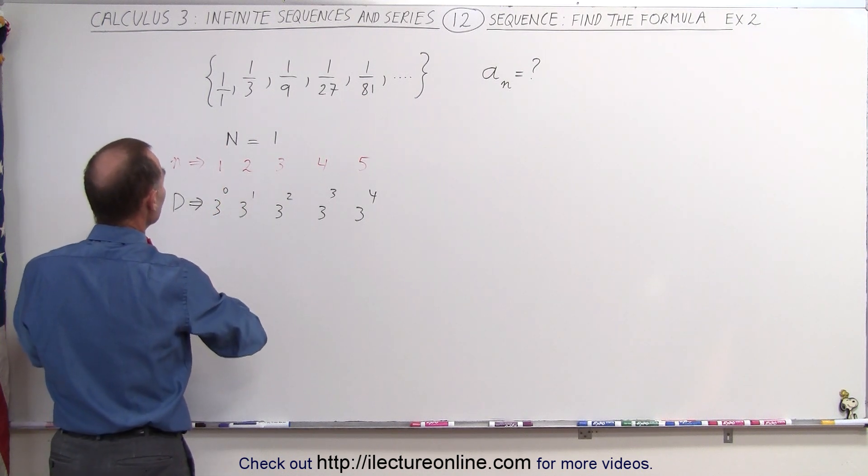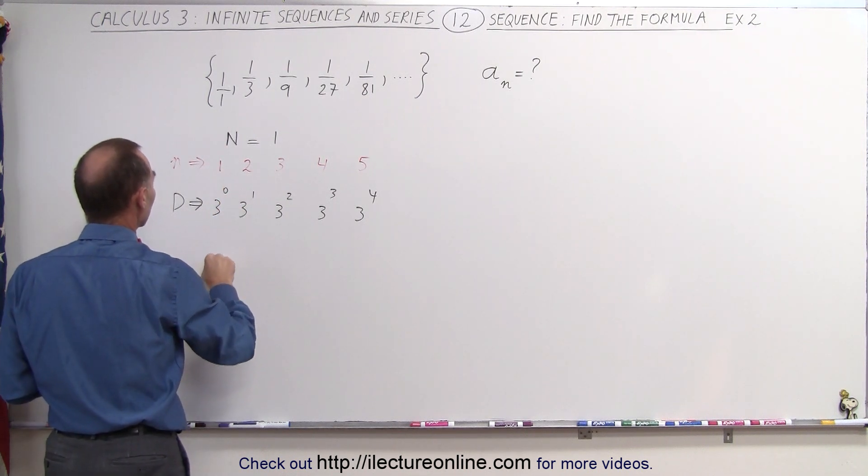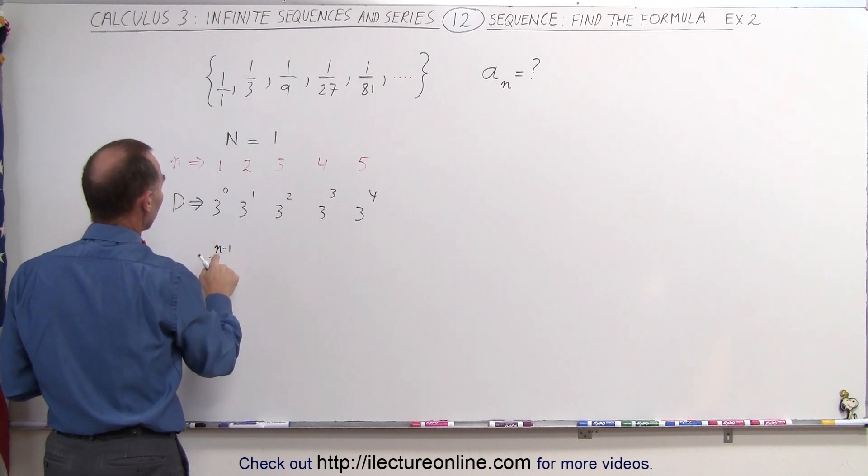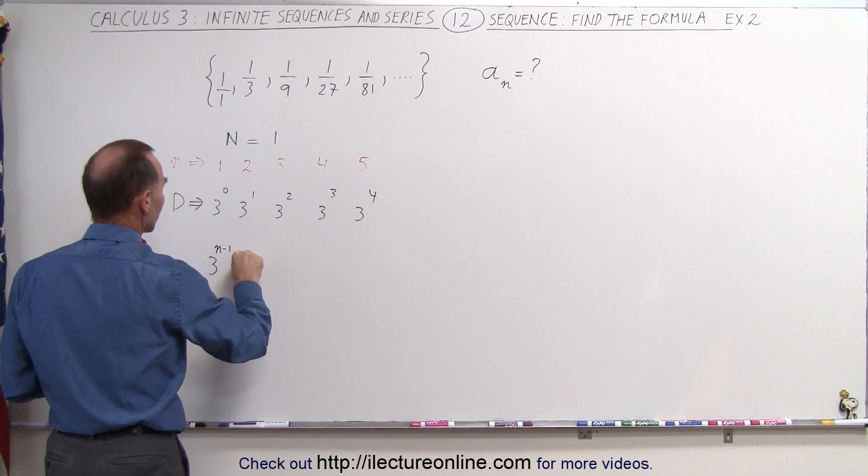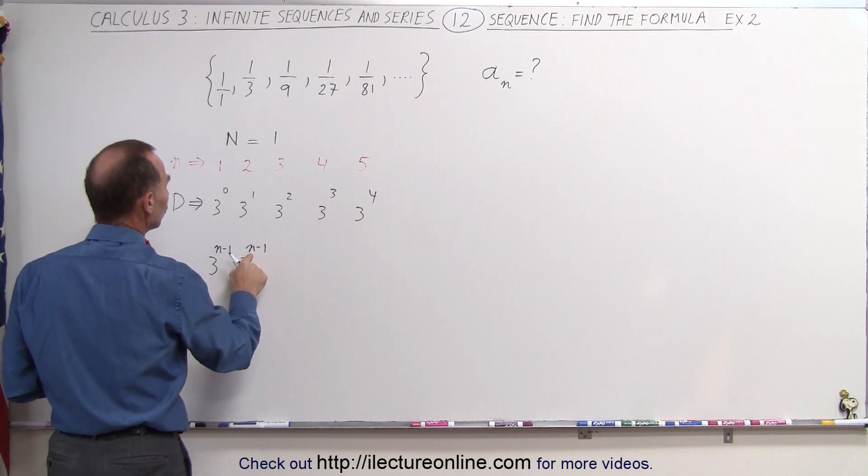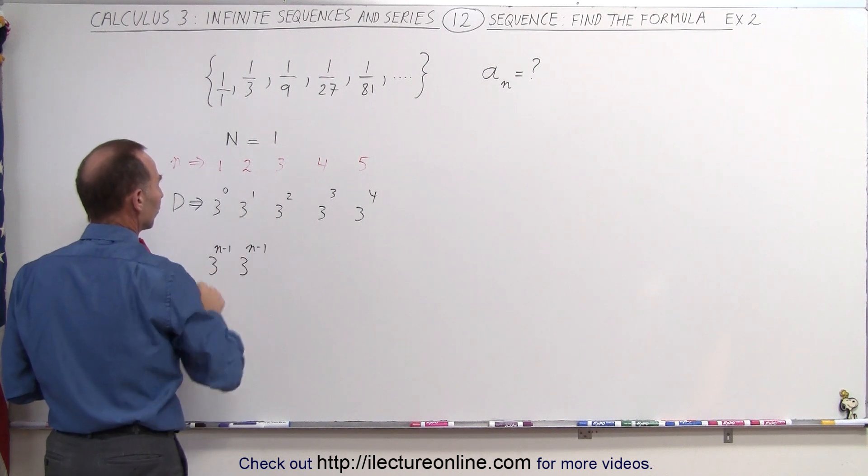Which means that the first denominator can be written as 3 to the n minus 1. Since n is going to be 1, 1 minus 1 is 0, gives us this. Here we have 3 to the n minus 1. Because when n is 2, 2 minus 1 is 1. We get 3 to the first power.